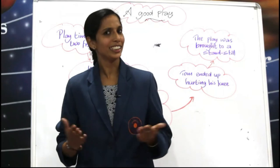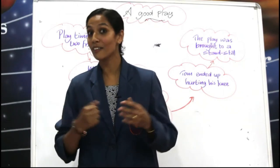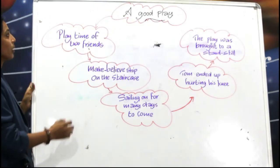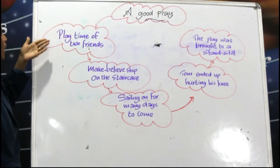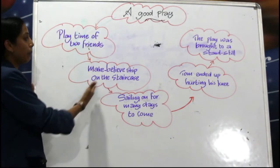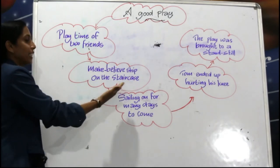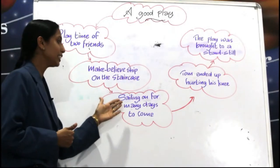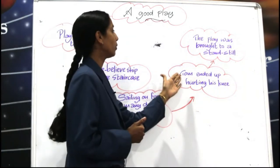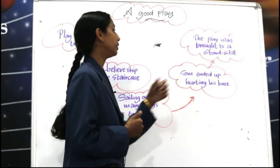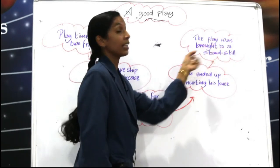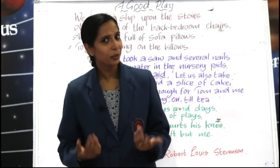So dear kids, these are the new words we are going to learn in this poem. Now let us have a look at the mind map of the poem 'A Good Play.' In this poem we will learn about the playtime of two friends, how they build a make-believe ship on the staircase, how they have been sailing for many days, and how Tom ended up hurting his knee and the play was brought to a standstill.